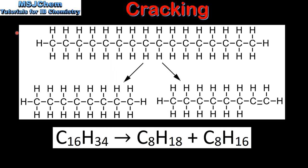Here we have C16H34 being broken up into C8H18, which is octane, and C8H16, which is octene. Octane is a saturated hydrocarbon with carbon-to-carbon single bonds. Octene is an unsaturated hydrocarbon with a carbon-to-carbon double bond.